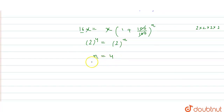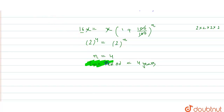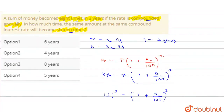If n = 4, that means the time period is equal to 4 years. So the required time period is 4 years. That means the amount will become 16 times in 4 years. Thank you.